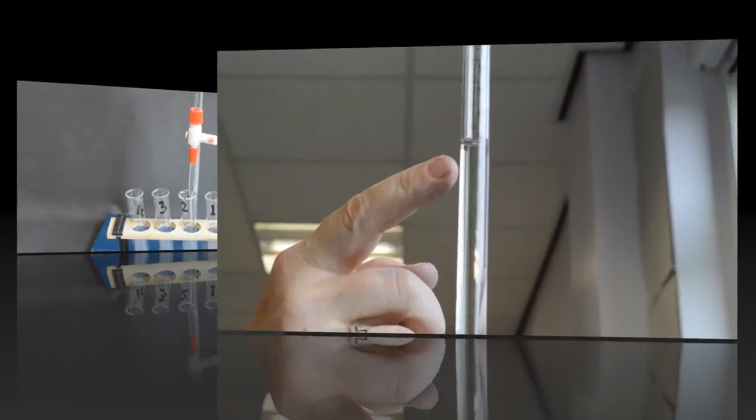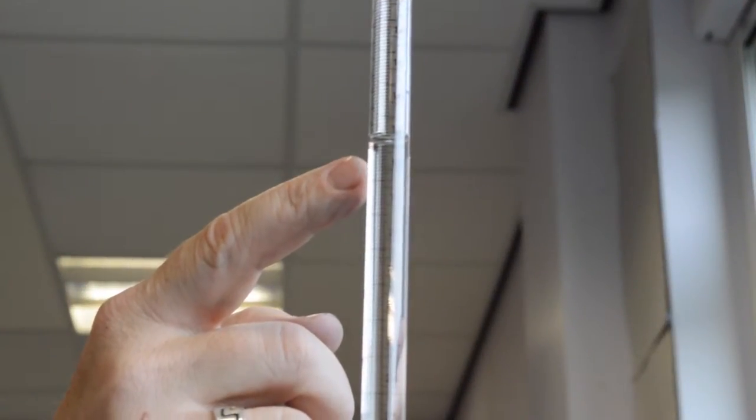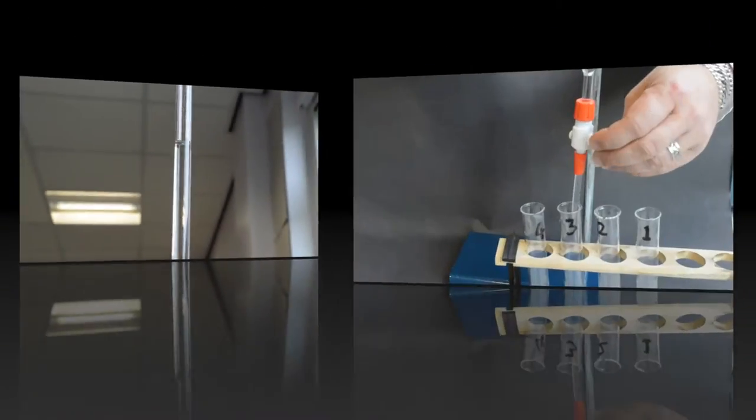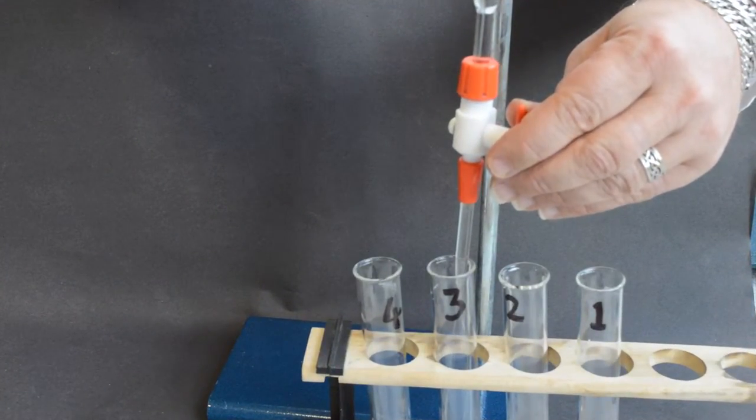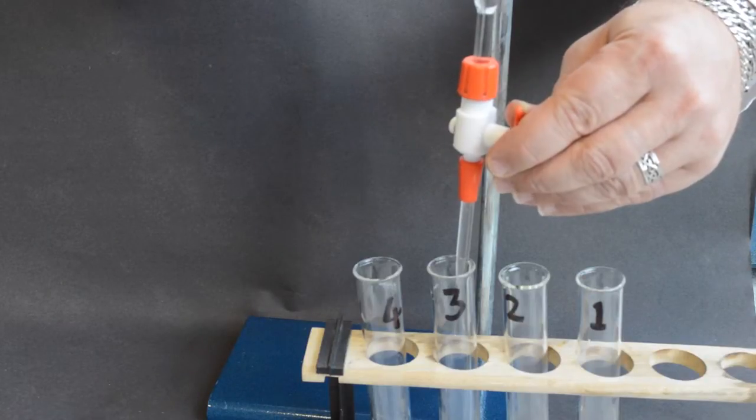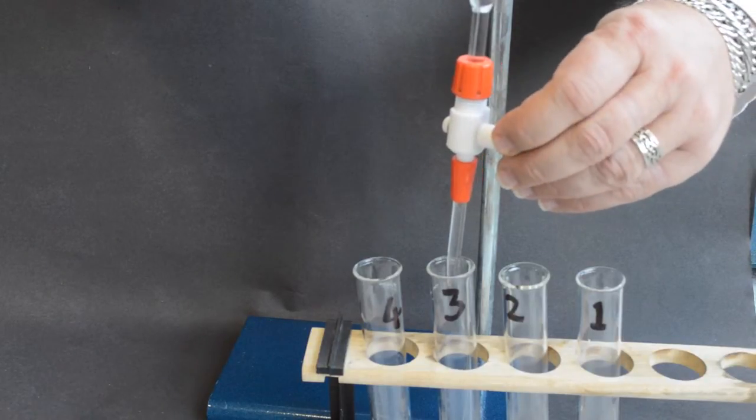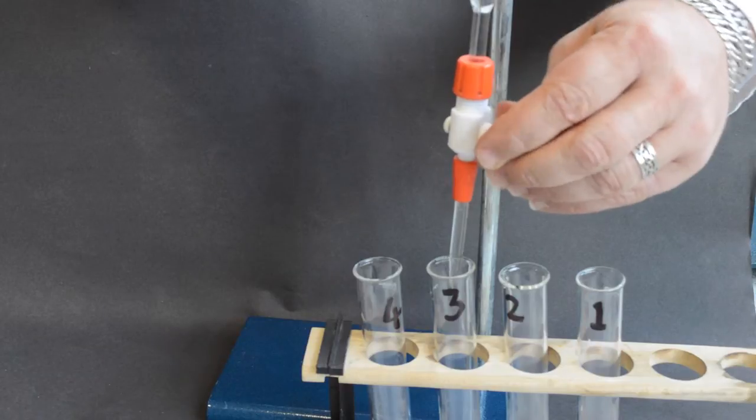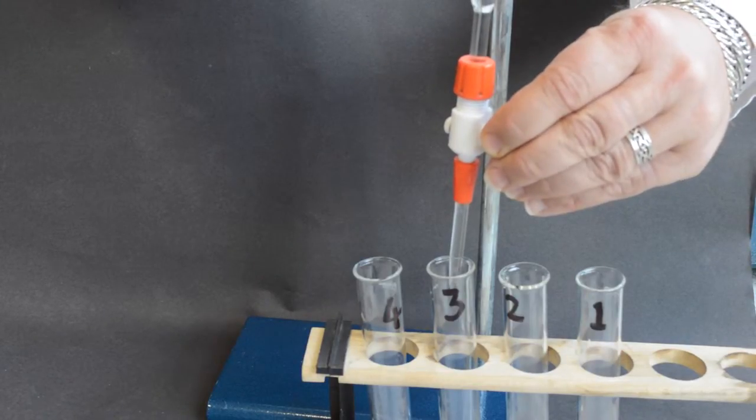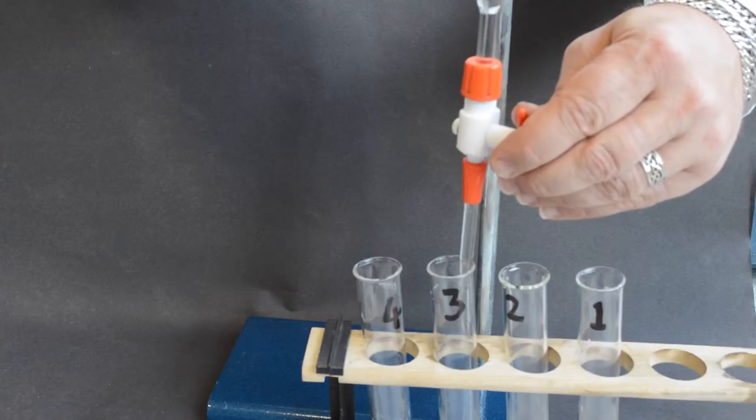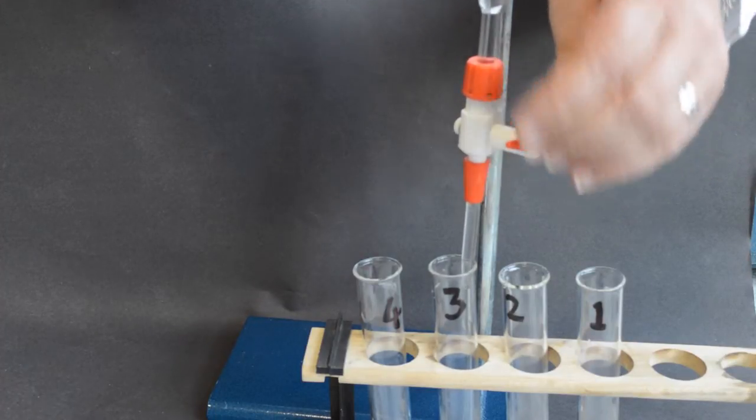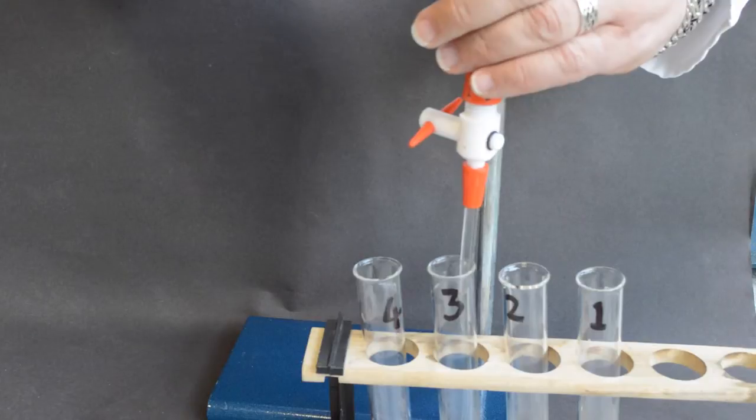Note the end volume in the burette. Repeat this step with tube number three, adding only seven milliliters of water to this tube. Repeat this process with decreasing volumes of distilled water for tubes four to nine.